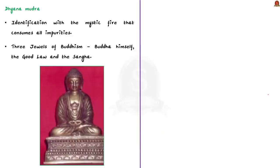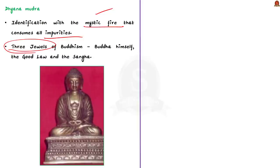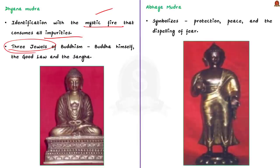Finally, Abhaya Mudra symbolizes protection, peace, and the dispelling of fear. In summary, we have seen: the three jewels of Buddhism, the four noble truths of Buddhism, the eightfold path of Buddhism, and the important mudras — Dharma Chakra Mudra, Bhumisparsha Mudra, Varada Mudra, Dhyana Mudra, and Abhaya Mudra.